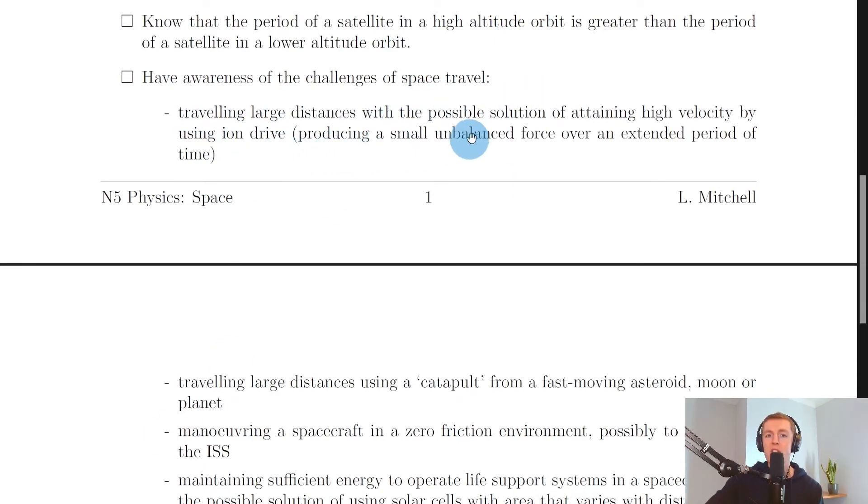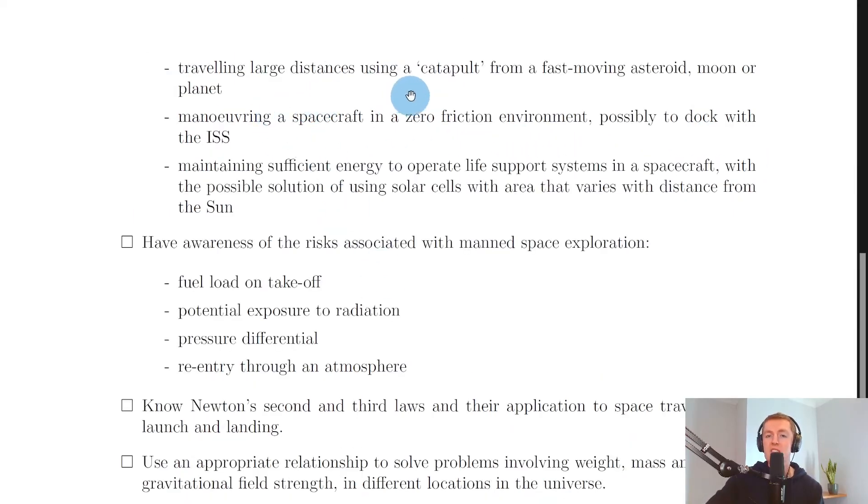Next, you need to have awareness of the challenges of space travel, and some of them are listed here for you. So the first one is traveling large distances, with the possible solution of attaining high velocity by using ion drive, which is producing a small unbalanced force over an extended period of time. Or we have traveling large distances using a catapult from a fast-moving asteroid, moon, or planet. We looked at that in the theory video for challenges of space travel, but we called it gravity assist or gravitational slingshot.